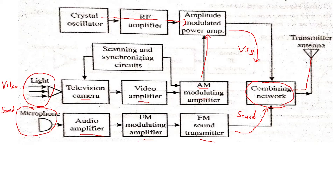For monochrome TV, we speak only about the brightness signal — the brightness determines whether the picture appears white or black. For color TV, the camera produces three signals: RGB, that is red, green, and blue. Taking those three signals, we have to encode and then decode at the receiver.